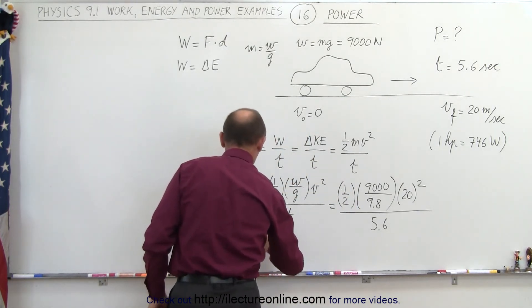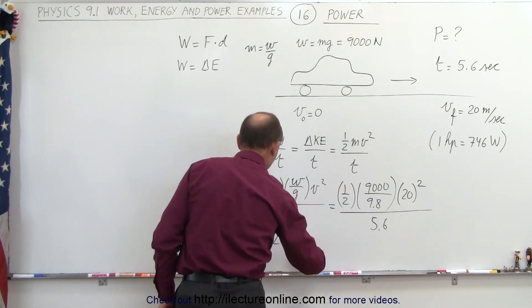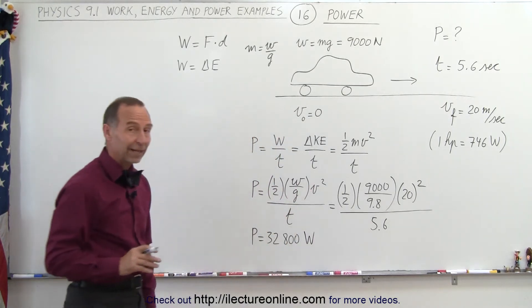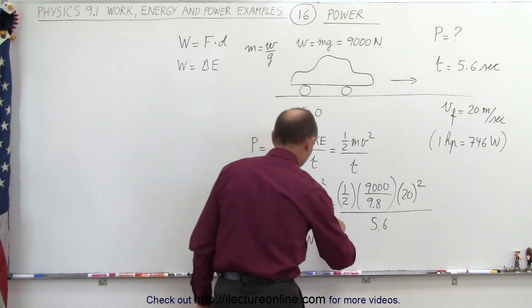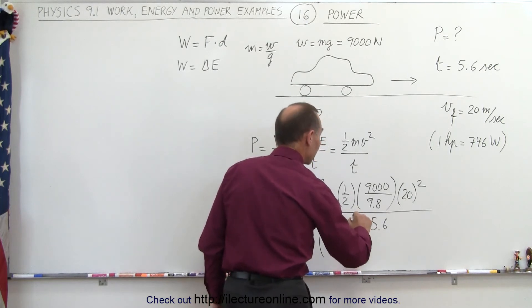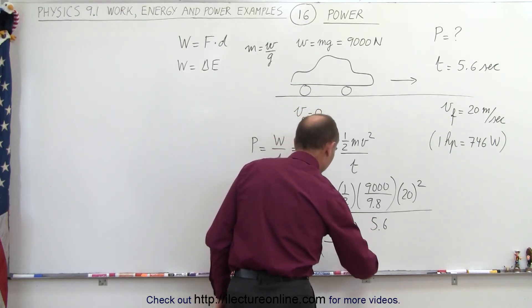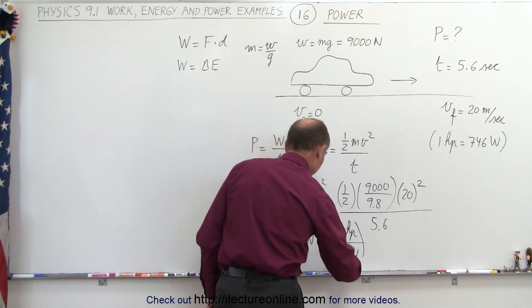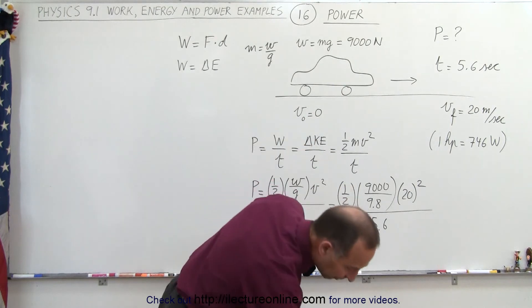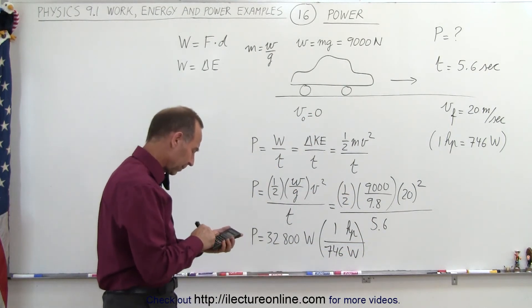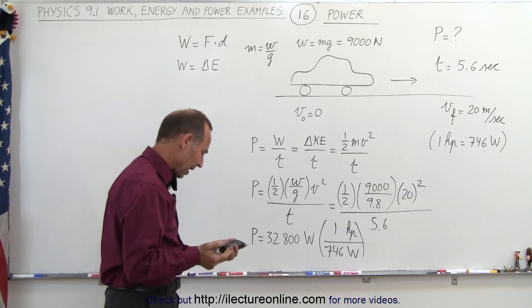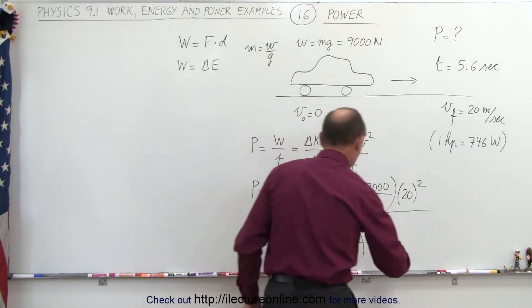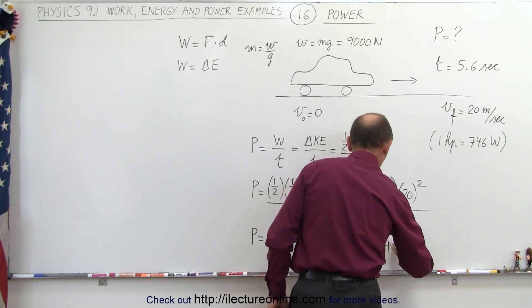The power required is equal to 32,800 watts. Now if you'd like to convert that to horsepower, we need the conversion factor. We put horsepower at the top and watts at the bottom so we can cancel out watts, and one horsepower is 746 watts. So let's divide that by 746. That means we have just about 44 horsepower required to do that.